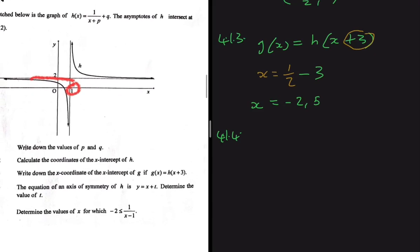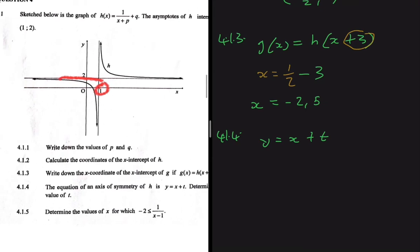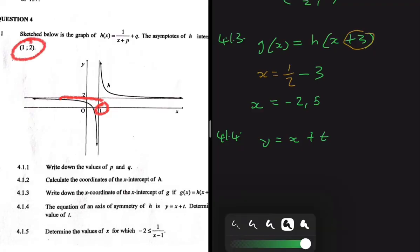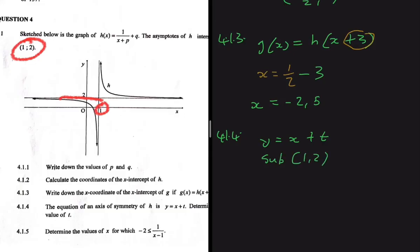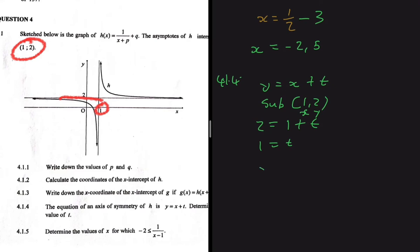For 4.1.4, the equation of an axis of symmetry of h is given as y = x + t and we need to find t. The slope is given; we just need the intercept. For a hyperbola's axis of symmetry, we substitute the point where the asymptotes intersect, which is (1, 2). Substituting gives 2 = 1 + t, so t = 1. The axis of symmetry is y = x + 1.